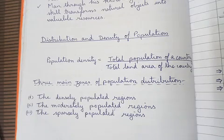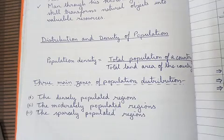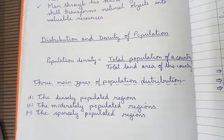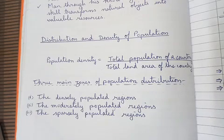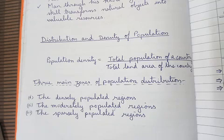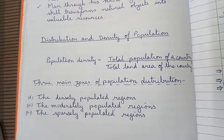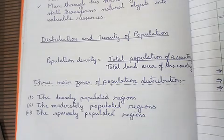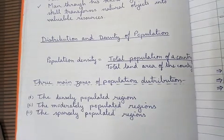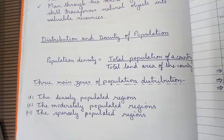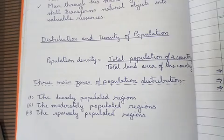First we look at densely populated regions. In densely populated regions you can find many countries — for example, China, India, Bangladesh, Pakistan, Malaysia, Indonesia, Japan, Sri Lanka, and Thailand. These countries are highly populated, very densely populated — they have a very large population.